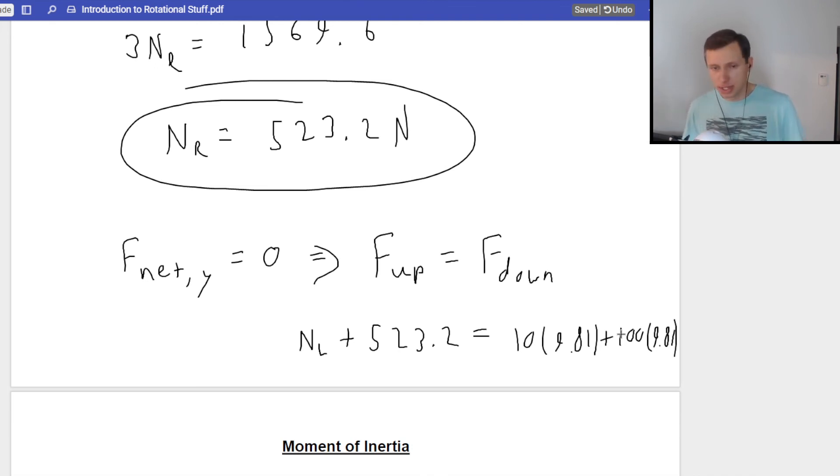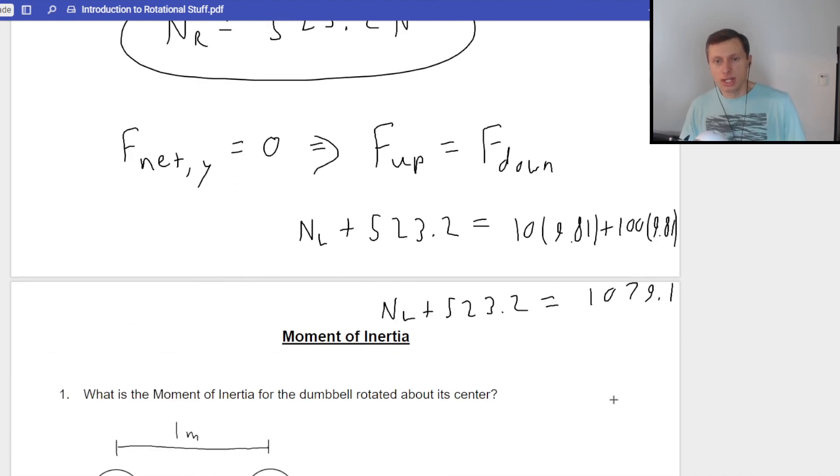And once again, I just need to solve the algebra here. So the right side, 10 times 9.81 plus 100 times 9.81. It is going to be a different number than before because I'm not factoring in the distance. So NL plus 523.2. On the right side, 1079.1. Subtract 523.2 from both sides. And we'll get a final answer of normal force on the left is 555.9 Newtons.